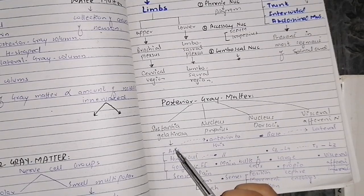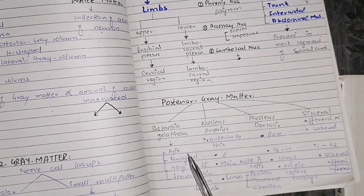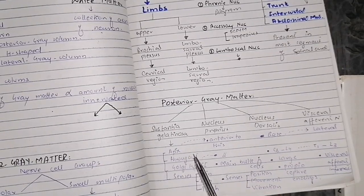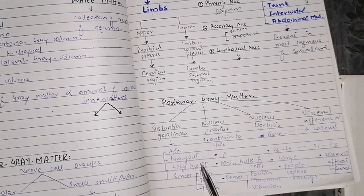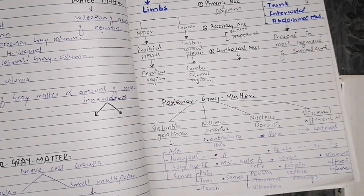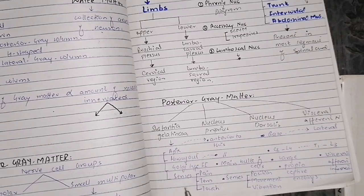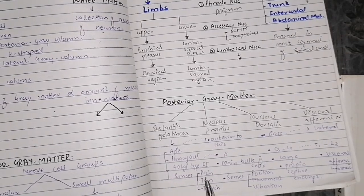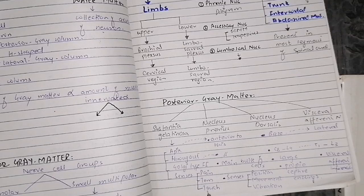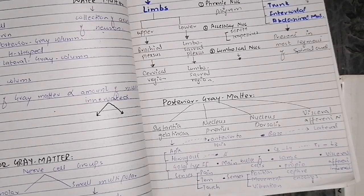The first nucleus is substantia gelatinosa, located at the apex. It is present throughout the spinal cord. It contains Golgi type 2 neurons and deals with the sensations of pain, temperature, and touch.